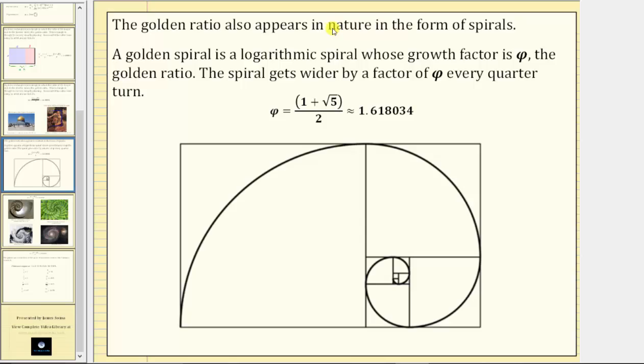The golden ratio also appears in nature in the form of spirals. A golden spiral is a logarithmic spiral whose growth factor is phi, the golden ratio. The spiral gets wider by a factor of phi every quarter turn. And here we have an image of the golden spiral. Each quarter turn, the spiral gets wider by a factor of the golden ratio.